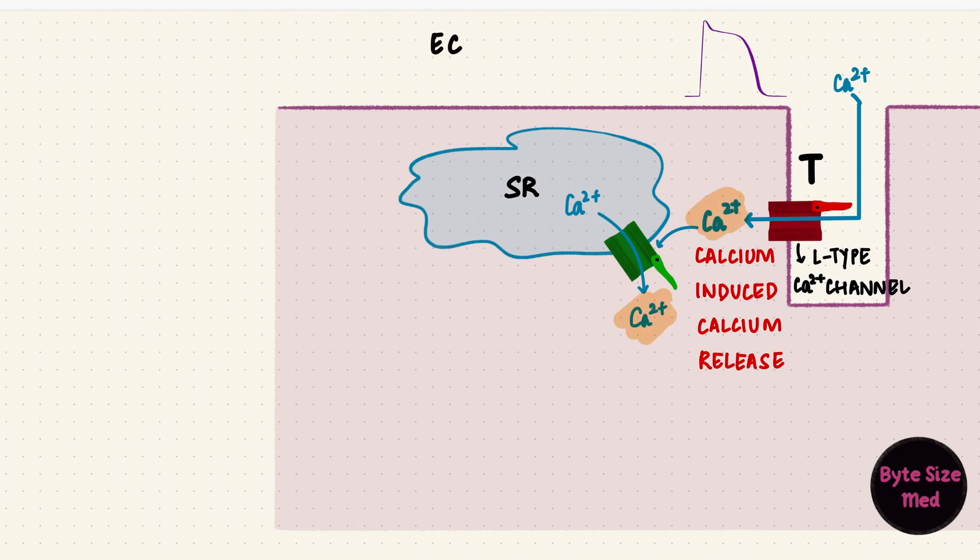the extracellular fluid and the sarcoplasmic reticulum. The next series of steps is the same. Calcium binds to troponin C, and ultimately, by the thin filaments sliding over the thick filaments, the sarcomere shortens and the muscle contracts.